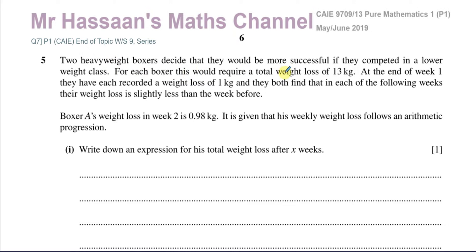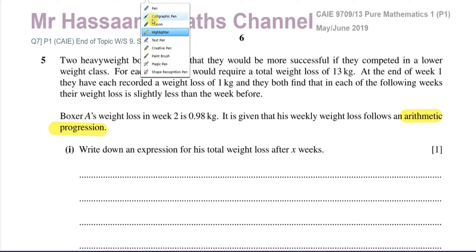For each boxer, this would require a total weight loss of 13 kilograms. At the end of week one, they each recorded a weight loss of one kilogram, and they both find that in each of the following weeks their weight loss is slightly less than the week before. Boxer A's weight loss in week two is 0.98 kilograms, and it is given that his weekly weight loss follows an arithmetic progression. Write down an expression for his total weight loss after X weeks.